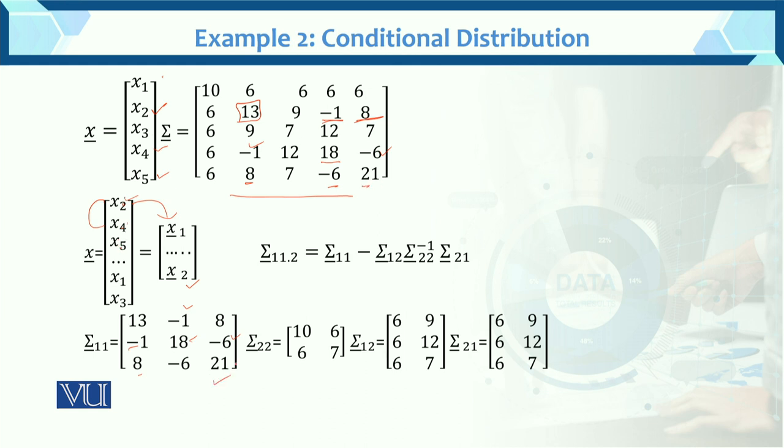So Σ11 is arranged. Now the covariance term. We have to check first and second. Next we have Σ1,2. Σ1,2 is x2, x1. So first we have x2, x1, means second row, first value.